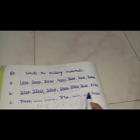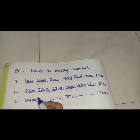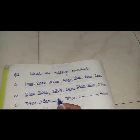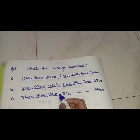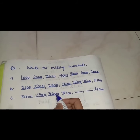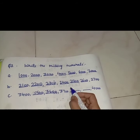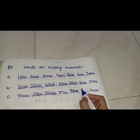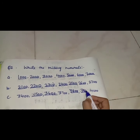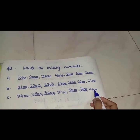Now the next question: 3,400, two blanks, 3,700, two blanks, and in the end 4,000. After 3,400 comes 3,500. Then 3,600. Then 3,700 is written. What comes after 3,700? 3,800. What comes after 3,800? 3,900. And 4,000 is written here.